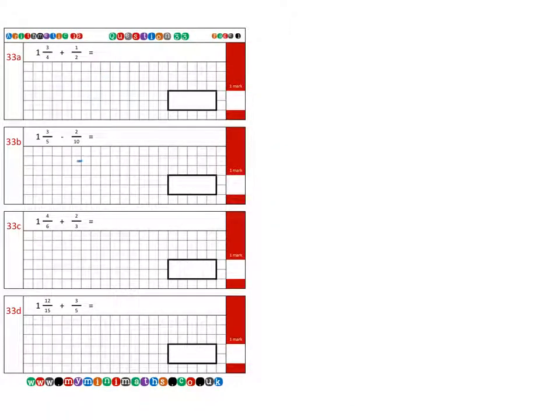Next is question 33b, where we're going to be subtracting this time, and we have 1 and 3 fifths, subtract 2 tenths. The first thing we're going to do is change this mixed number into an improper fraction, a top-heavy fraction.